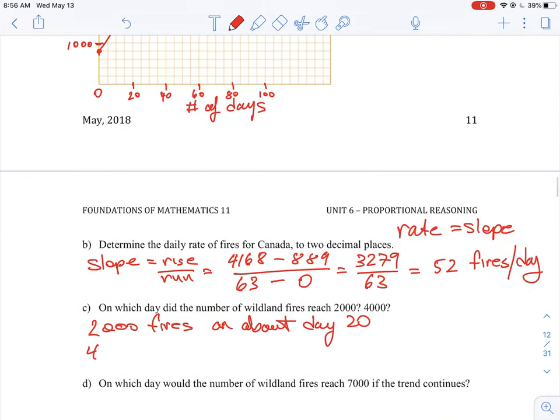And then 4,000 fires happened just before 60 days. So we can say 4,000 fires on about day 58 or 59, just before 60 days. So that's how we would look at doing those two questions.